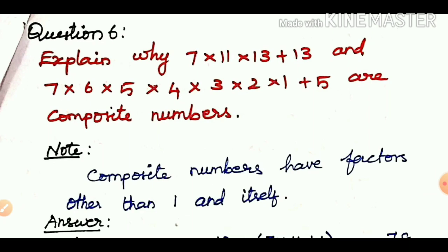Question number 6: Explain why 7×11×13+13 and 7×6×5×4×3×2×1+5 are composite numbers. What are composite numbers?